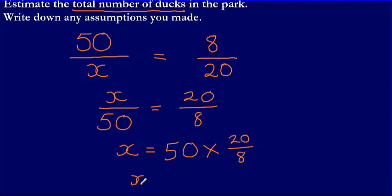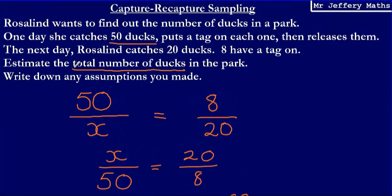Therefore X equals 50 times 2.5, which gives us 125. So the estimate for the total number of ducks in the park would be about 125.